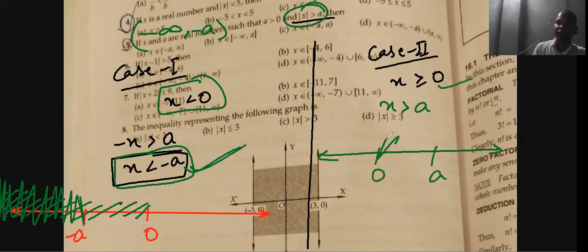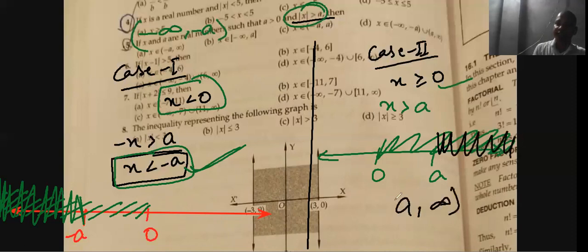First, we say that x is greater than 0. Then, in the second part, we have said that x is greater than A. This means that overall we can write A to infinity. Okay. Now, when you combine it, you will become minus infinity to minus A union A to infinity.